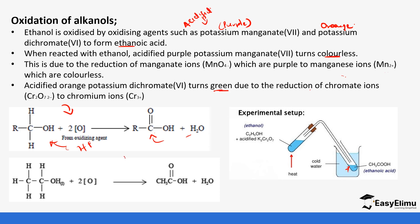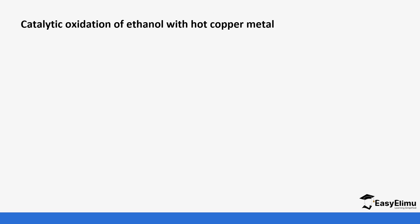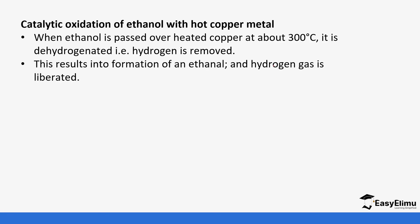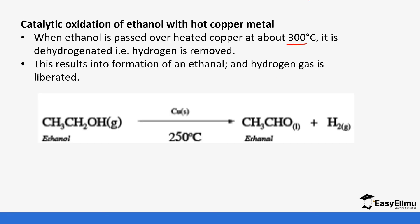In this reaction, the oxidizing agent needs to be acidified. Next, the oxidation of ethanol with hot copper metal: when ethanol is passed over heated copper at about 300°C, it becomes dehydrogenated — the hydrogen is removed. This process forms ethanal. It is still an oxidation of alcohols, but this happens in the presence of copper and the reaction does not go to completion.